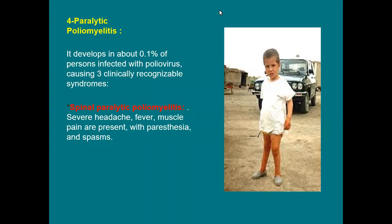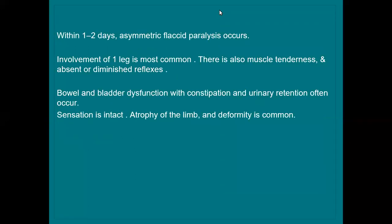In spinal paralytic polio, there is severe headache, fever, and muscle pain with paresthesia and spasm. Within one to two days, asymmetric flaccid paralysis will occur — affecting only one limb, not both. Flaccid paralysis indicates hypotonia. Involvement of one leg is the most common type. On examination there is muscle tenderness and absent or diminished deep tendon reflexes.